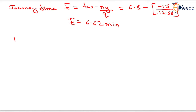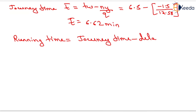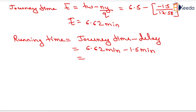Now we determine the running time. Running time equals journey time minus delay. Journey time is 6.62 minutes and the delay for the north-south direction is 1 minute 30 seconds, that is 1.5 minutes. Solving this gives a running time of 5.12 minutes.